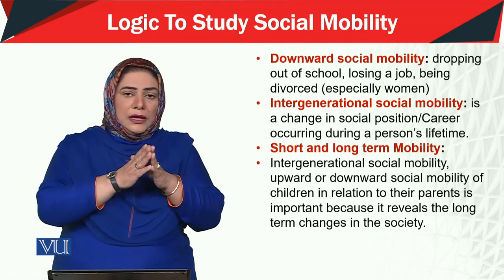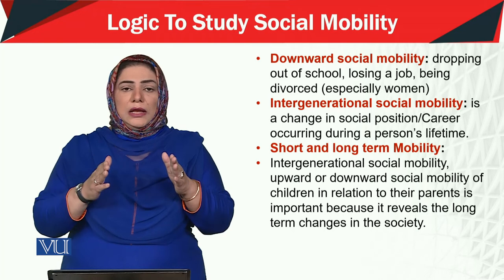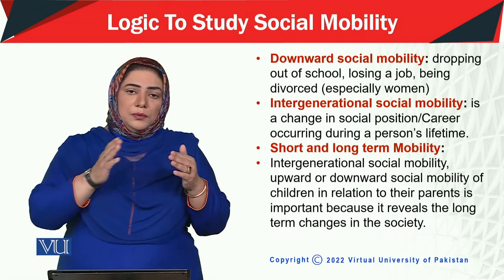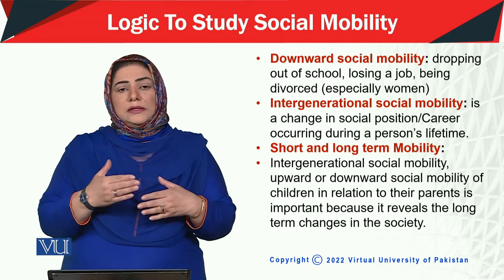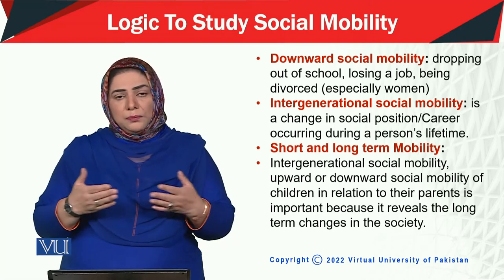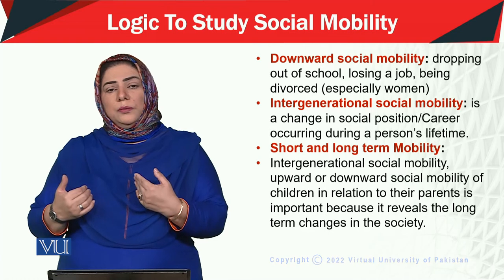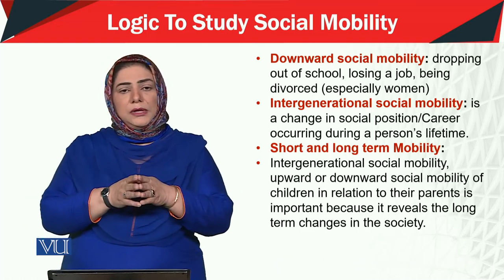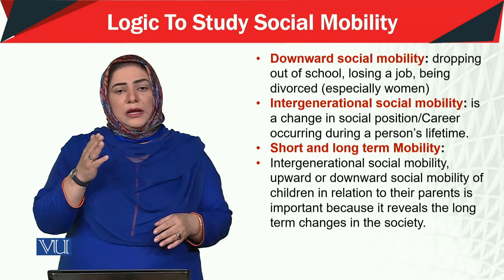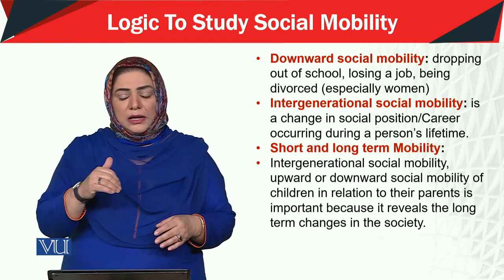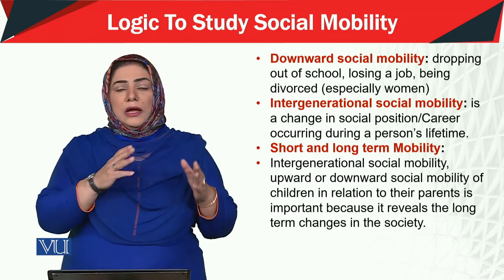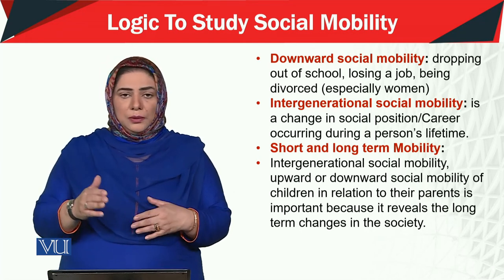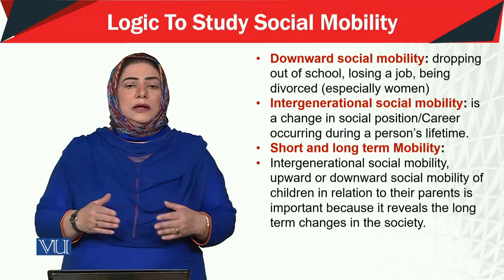For example, the first person in a family who got an education created good opportunities for themselves, and because of that, the entire family became inclined to collectively make the effort to improve their status — this is long-term mobility. These are the different categories of social mobility, which can be long-term or short-term, and we need to understand it in this context.